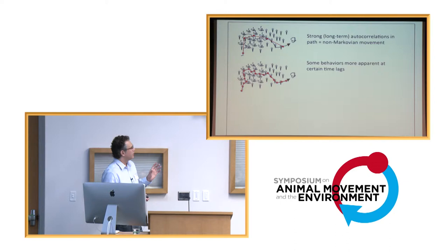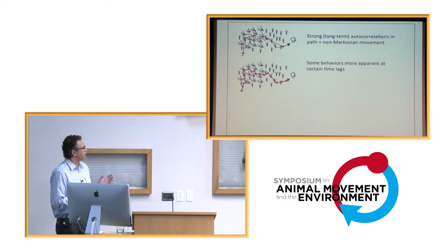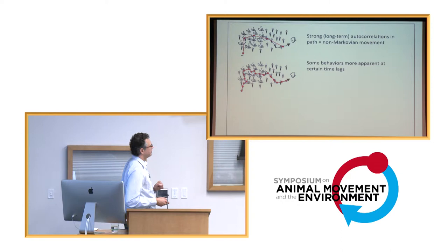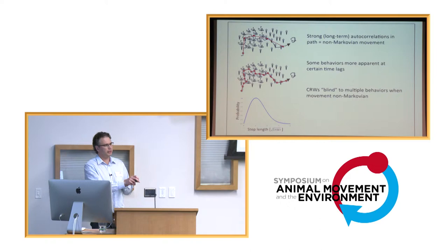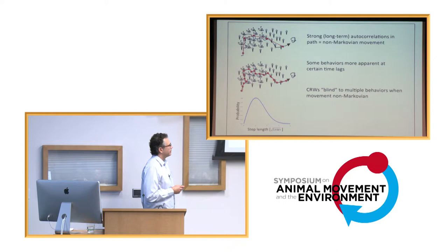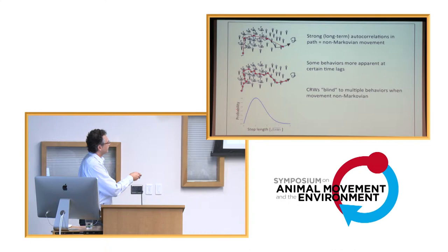And if you're looking for different movement behaviors in a path, sometimes they're more apparent at certain time lags than others. So if you sample one way, it might reveal one particular behavior. If you sample another, it might reveal something different. Now, this Markovian correlated random walk framework is essentially blind to this kind of multiple movement behaviors. When you have these time lagged relationships, these persistent autocorrelations in the data, correlated random walks just can't see that.